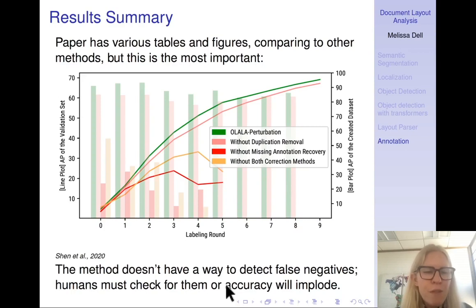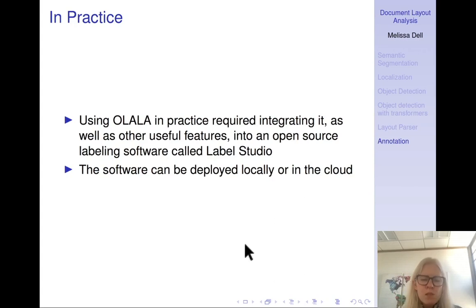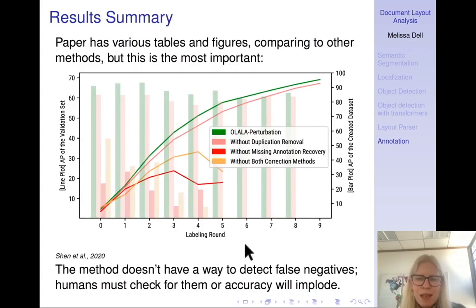Importantly the method that I've showed you doesn't have a way to identify false negatives. So what this figure shows is that OLALA, the baseline algorithm does very well. That's the green. If you don't remove duplicates, it's not a big deal. But if you don't have missing annotation recovery, then the performance really declines because then the model starts trying to learn that you don't want specific objects to be recognized on the page and it gets very confused. So what this means in practice is that the algorithm tells you which objects are most likely to need your attention on the image, but the labeling does happen at the image level. So when you see that image to annotate, you do need to pay attention to whether there's missing objects on the page. And if you don't, that's going to be problematic.